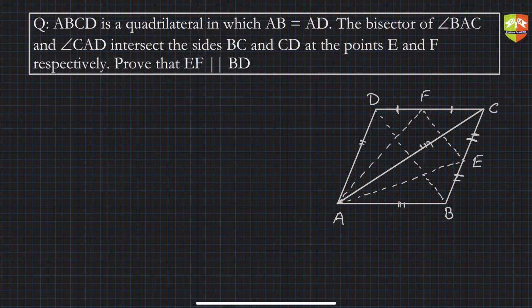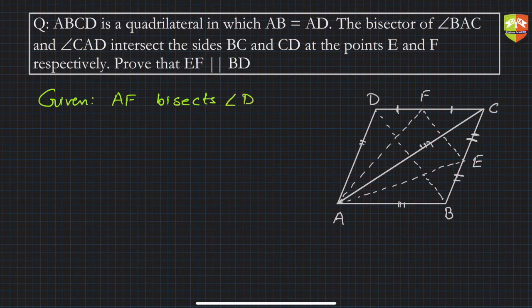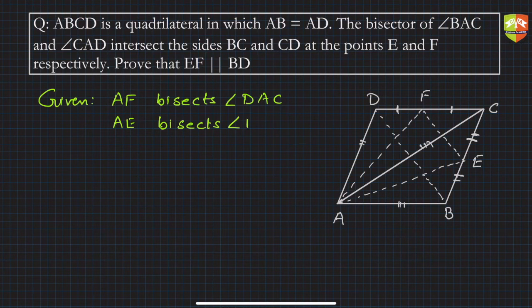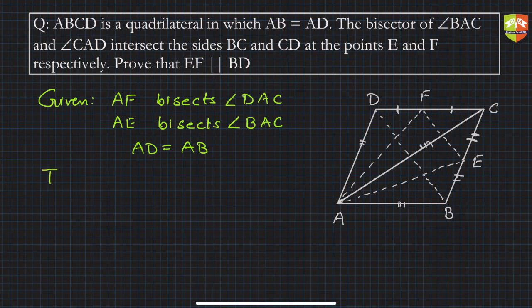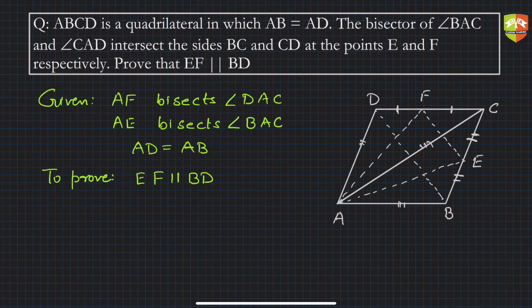Now let's write it formally. Given: AF bisects angle DAC, AE bisects angle BAC, and AD is equal to AB. We need to prove that EF is parallel to BD. We will use the Internal Angle Bisector Theorem and the converse of BPT. No additional construction is required.